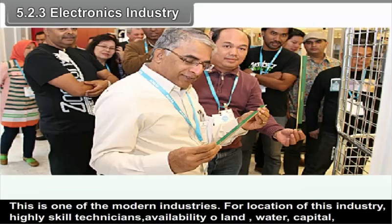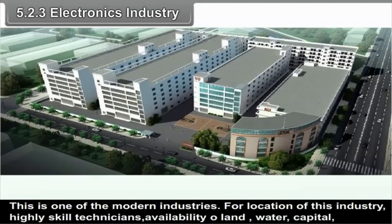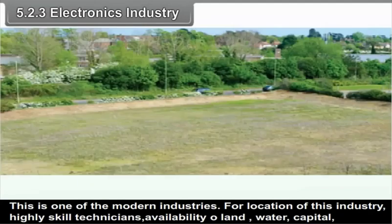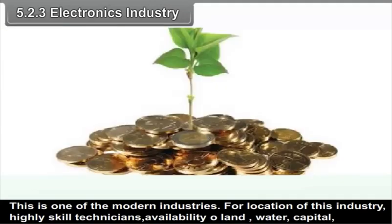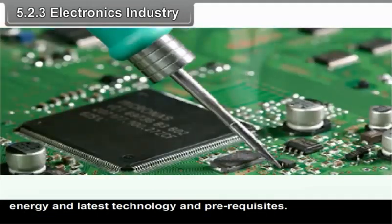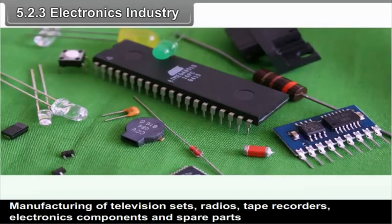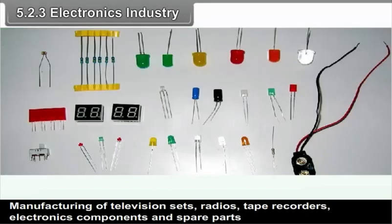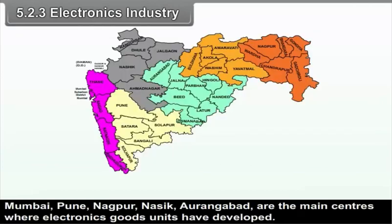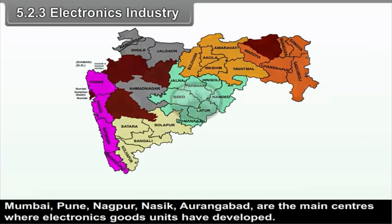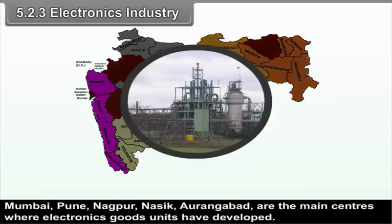5.2.3 Electronics Industry. This is one of the modern industries. For location of this industry, highly skilled technicians and availability of land, water, capital, energy and latest technology are the prerequisites. Manufacturing of television sets, radios, tape recorders, electronics components and spare parts come under electronic industry. Mumbai, Pune, Nagpur, Nashik and Aurangabad are the main centres where electronics goods units have developed.